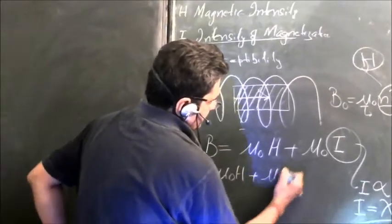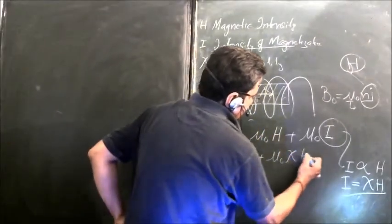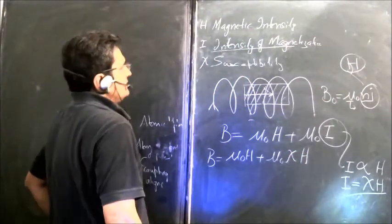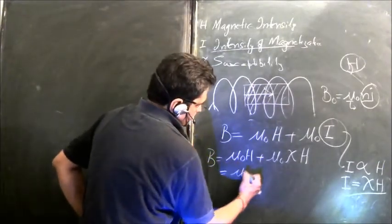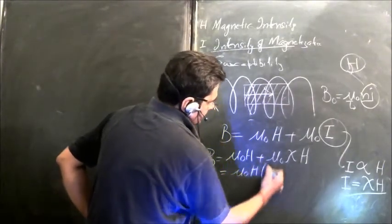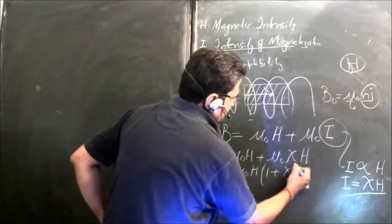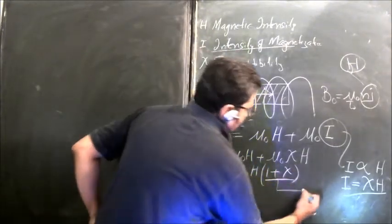So B is equal to mu_0 times mu_r times H. And this mu_0 times mu_r is permeability of the given material.